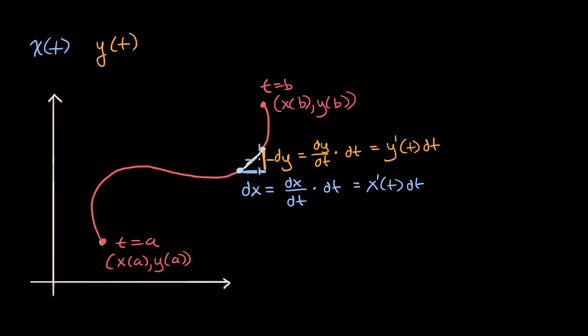Now, based on this, what would be the length of our infinitesimally small arc length right over here? Well, that we could just use the Pythagorean theorem. That is going to be the square root of, that's the hypotenuse of this right triangle right over here. So it's going to be the square root of this squared plus this squared.